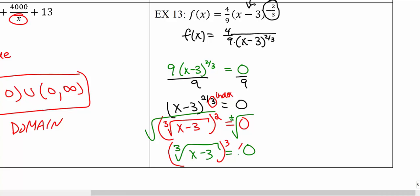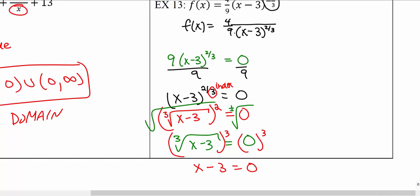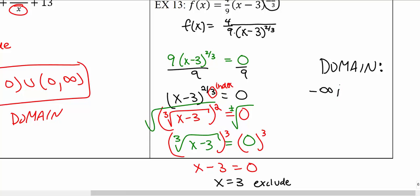Solving x minus 3 equals zero, we add 3 to both sides and get x equals positive 3 — the one value we need to exclude from the number line. Our domain becomes negative infinity all the way to 3, not including 3, united with 3 to positive infinity, not including 3: (-∞, 3) ∪ (3, +∞). This is our domain.